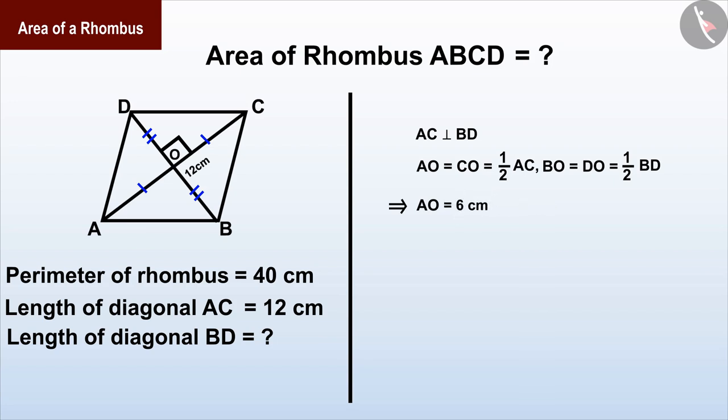Now can you tell the value of the side using the perimeter of rhombus? Since all the sides of the rhombus are of equal measure, the measure of the side of rhombus will be equal to one-fourth of the perimeter of the rhombus, which is 10 centimeters.